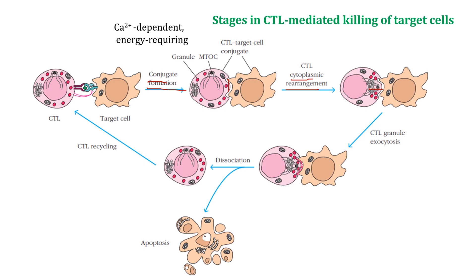Then the CTL granule exocytosis process occurs. The CTL releases granules into the space between the target cell and CTL. Once the granules are released, dissociation occurs — the CTL is recycled further and the target cell dies by apoptosis.